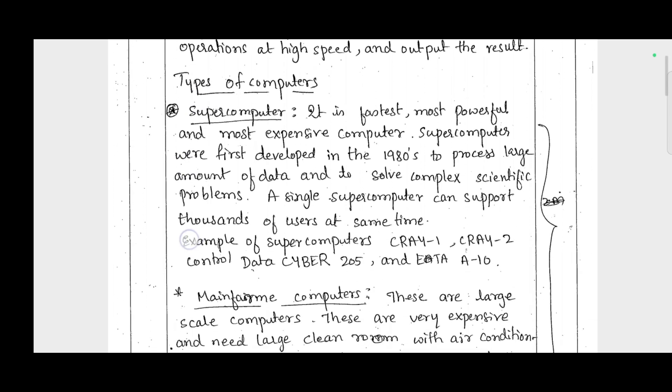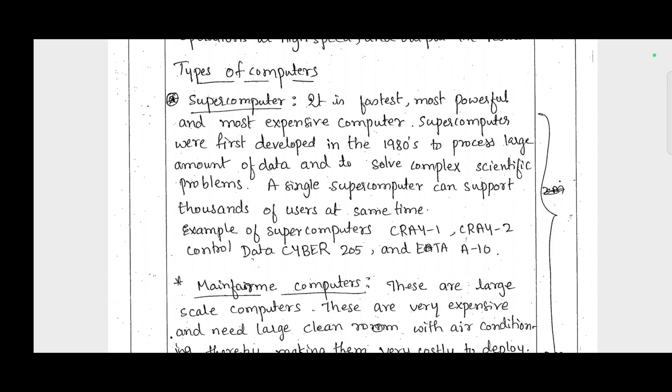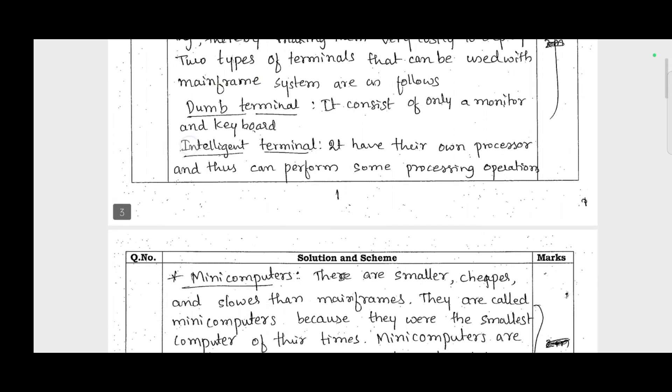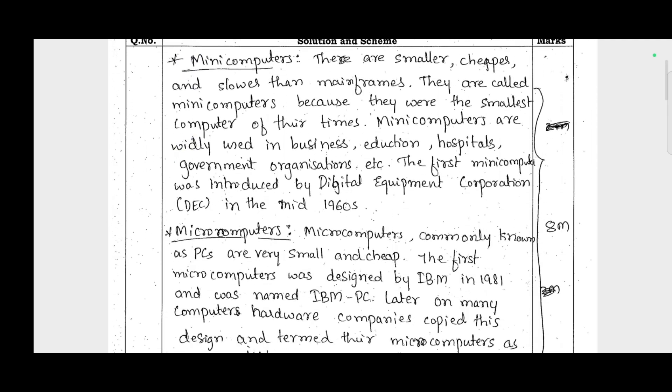Once you write down the types of computers like supercomputer, you write down the definition part, mainframe computers, you write down the definition part and similarly mini computers, micro computers.